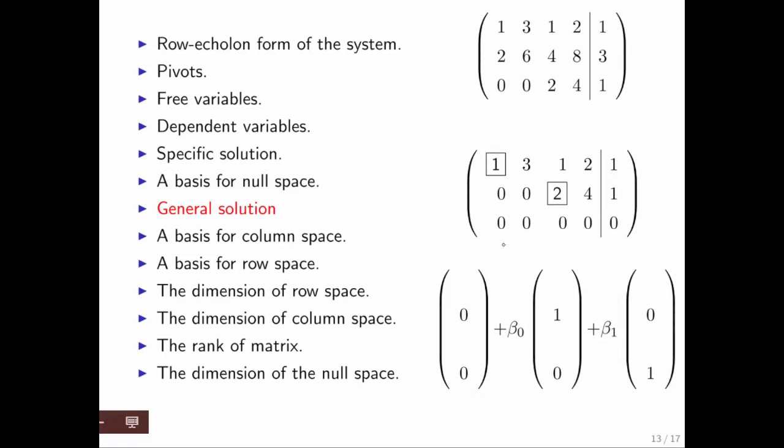The general solution is then given by taking the specific solution, which in this case was 1 half, 1 half there, and then whatever you computed for your vectors in the null space. Any specific solution plus a linear combination of the vectors that are a basis for the null space gives you a description of all vectors that satisfy the linear system.